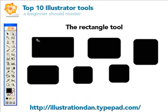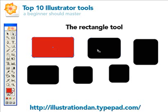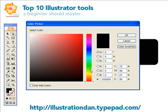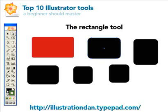I use the rounded rectangle tool a lot in my web design, so this is definitely an important tool to learn. You can change its colors just like with the rectangle tool, and you can change the stroke. Another thing you can do is have a fill and a stroke at the same time. But that's basically it for the rounded rectangle.